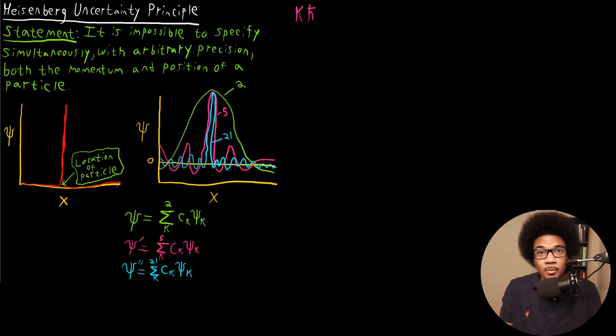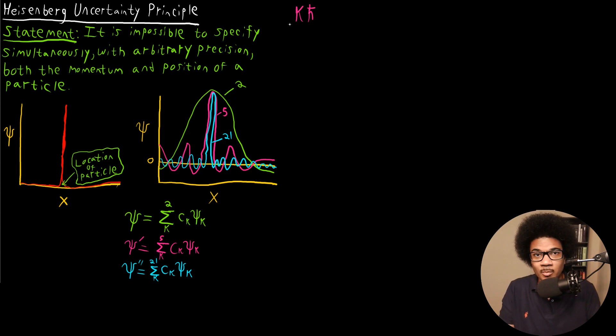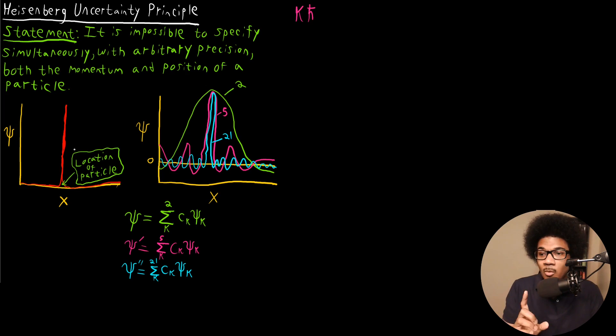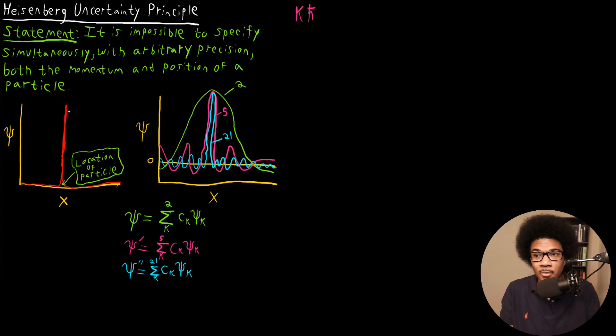Let's talk about the opposite of that. We know that if we know the momentum with 100% certainty, we lose a bit of information about the location. What if we wanted to know the location with arbitrary precision — what would happen to our understanding of the momentum? On the left, I have what the wave function would look like if we knew the location of the particle exactly. On the x-axis we have position and the y-axis is our wave function. It would spike right at the location of our particle and be zero literally everywhere else.